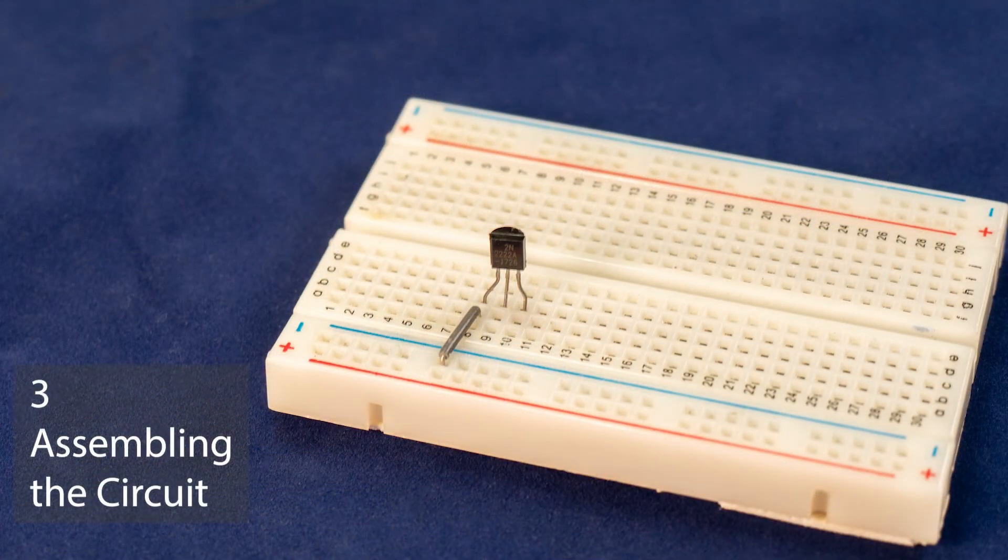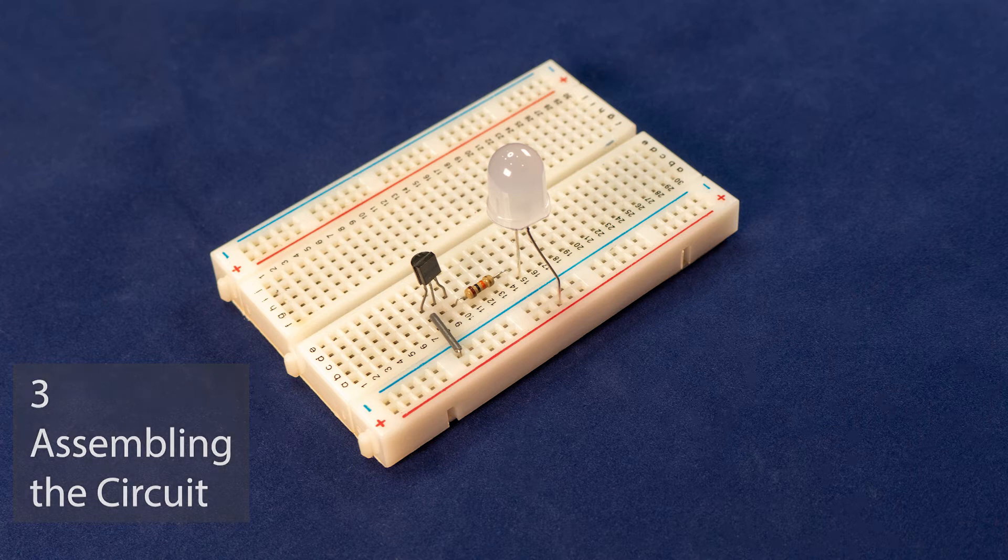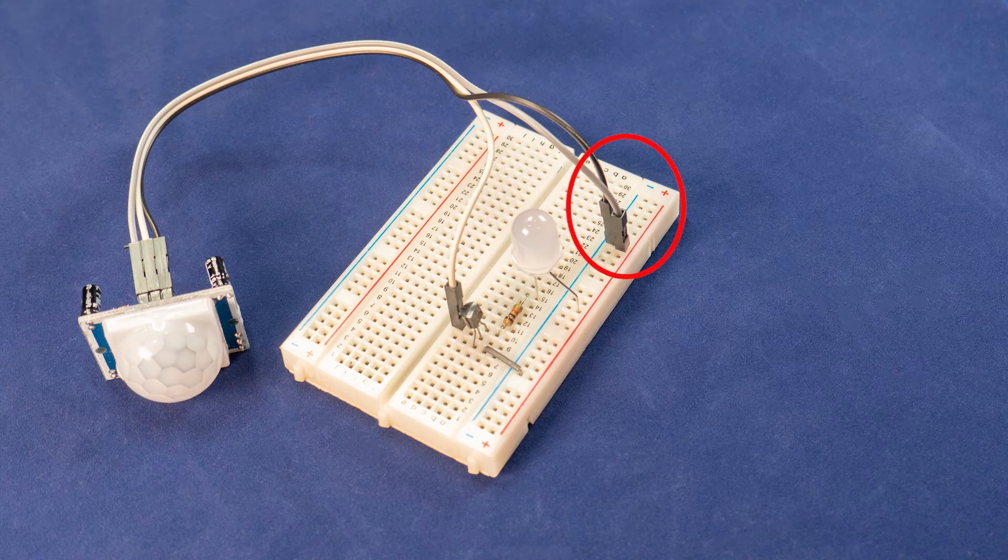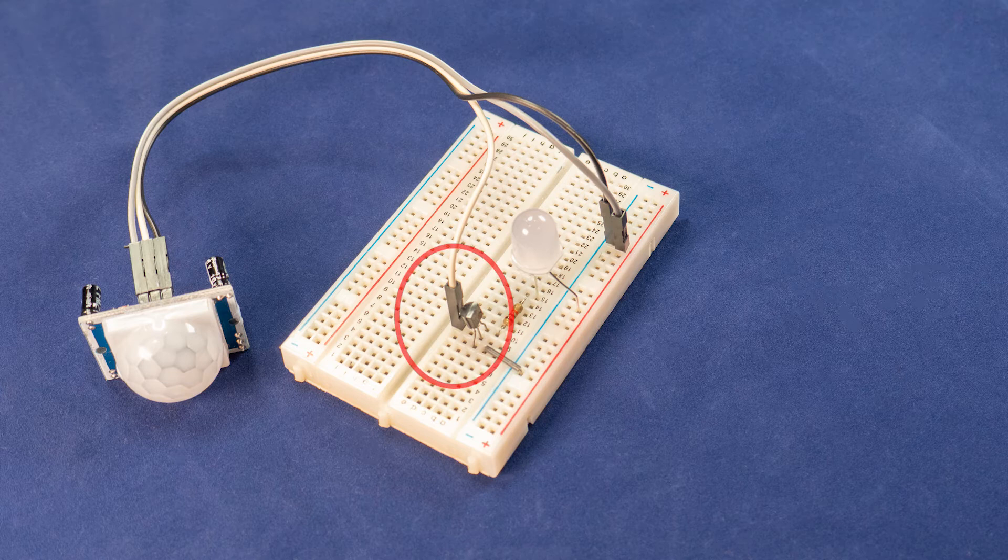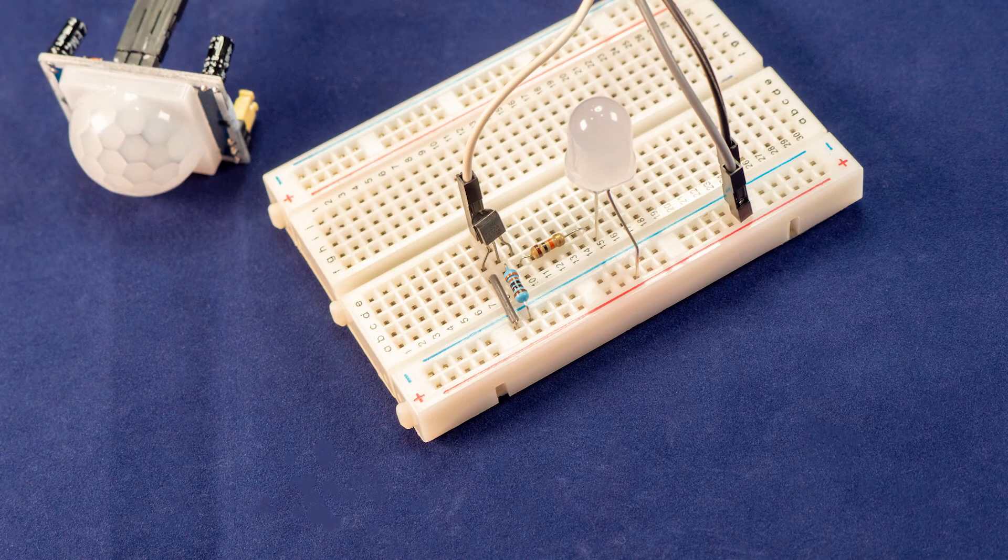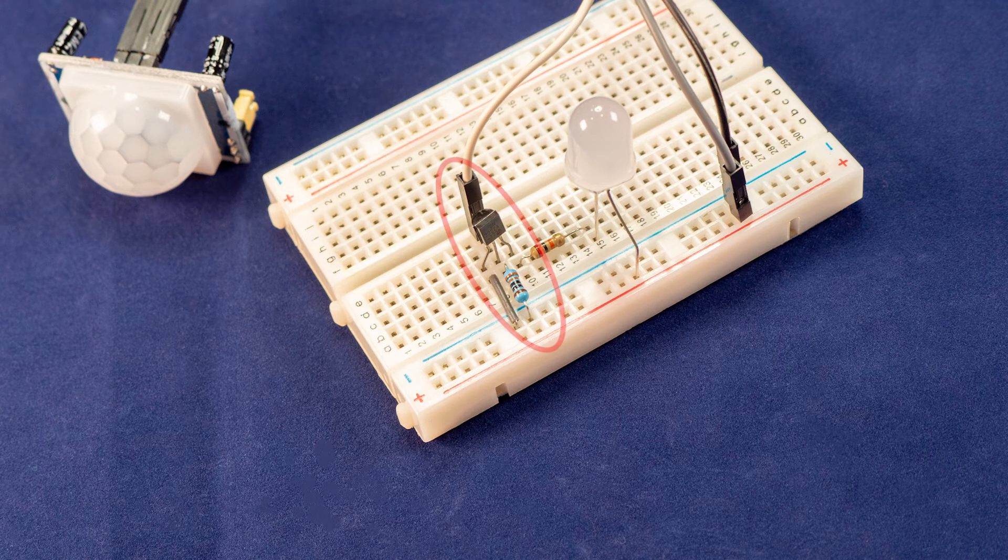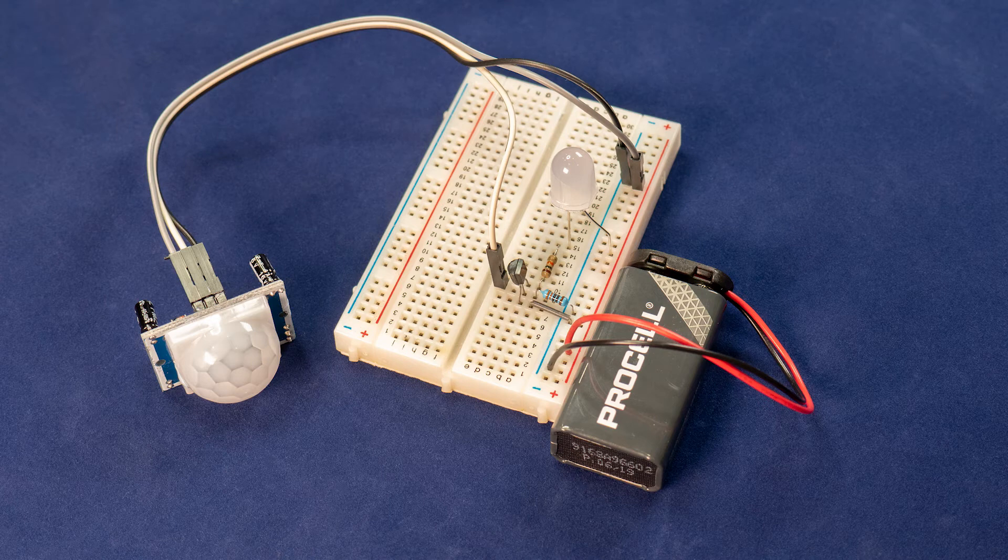Now let's start putting it all together. I'll start with the transistor and connect the emitter to ground. The current limiting resistor goes in line with the LED as it connects the collector of the transistor to the positive rail. Now I'll connect the PIR module voltage and ground connections and the signal line to the base of the transistor. The all-important pull down resistor comes next between the signal wire and ground. All that's needed now is to connect the battery to the voltage and ground rails of the breadboard.